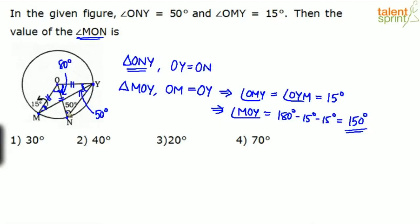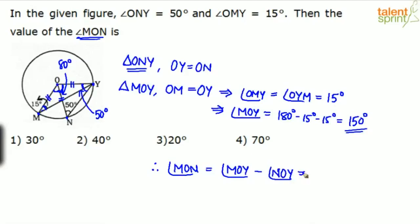Now what we need to find is angle MON. Angle MON equals angle MOY minus angle NOY. So that is 150 degrees minus 80 degrees, which equals 70 degrees. 70 degrees is the final answer — that is option 4.